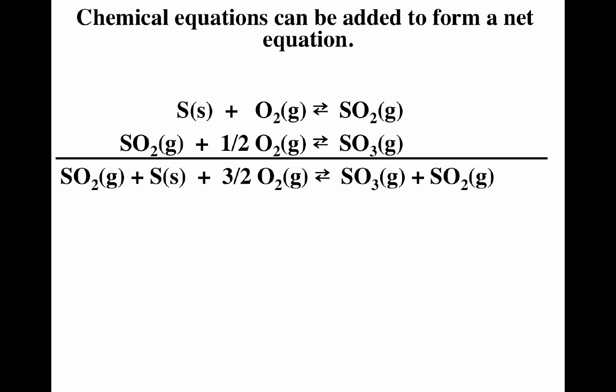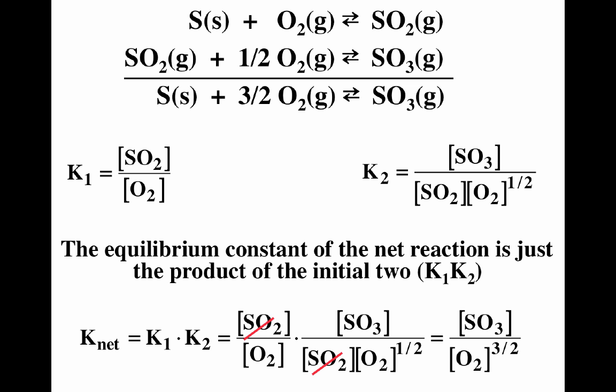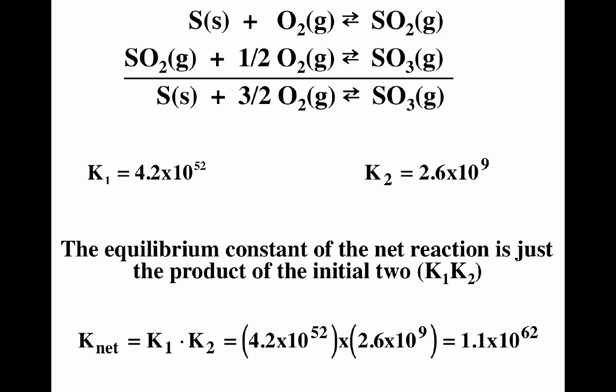We can also add reactions — reactions are a lot like mathematical equations. When we add reactions, things common on both sides cancel, giving us the net reaction. The top reaction has equilibrium constant SO2 over O2; the second reaction has equilibrium constant SO3 divided by SO2 times O2 to the half. Multiplying those together gives SO3 divided by O2 to the three-halves, which is the equilibrium constant for the sum of those two reactions. So if you add two reactions, you multiply the corresponding equilibrium constants. To summarize: swap products to reactants — take the inverse; multiply the reaction by a number — take the equilibrium constant to that power; add two reactions — multiply the equilibrium constants. Equilibrium is cool.